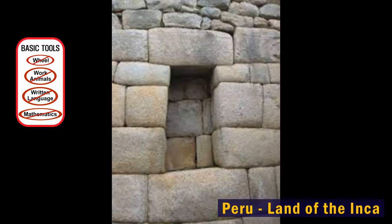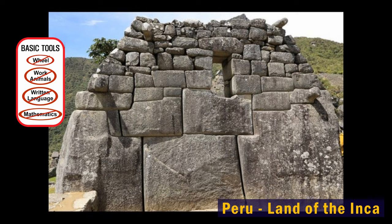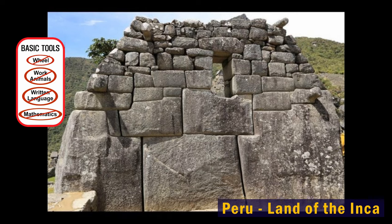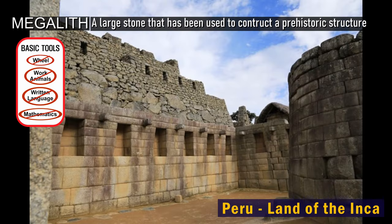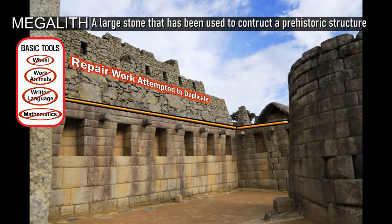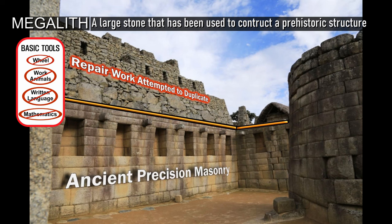Can you spot the repair work? At the bottom you can see the stones are each a different size and a different shape. It would stand to reason that the older part would be more crude, but it's the opposite — the oldest part is the best masonry in the world.